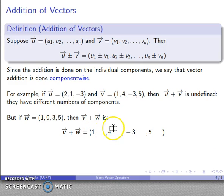So there's my vector v: (1, 4, -3, 5). I'm going to add (1, 0, 3, 5) to each of the individual components. And after all the dust settles, that gives you the vector (2, 4, 0, 10).